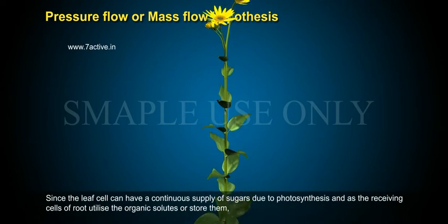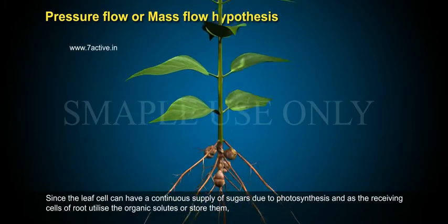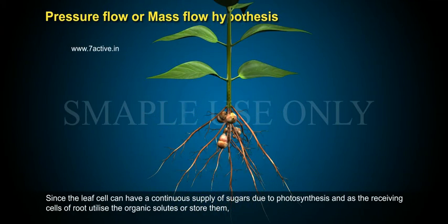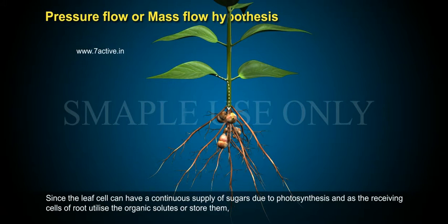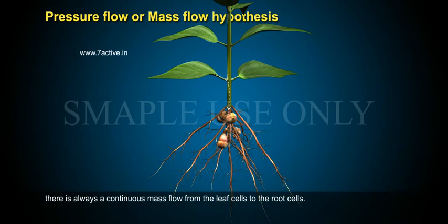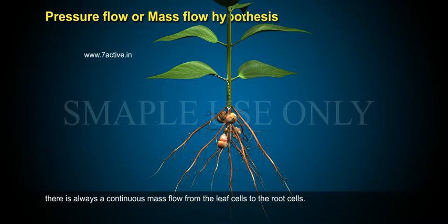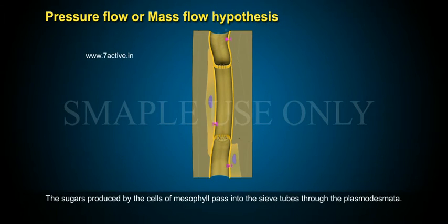Since the leaf cell can have a continuous supply of sugars due to photosynthesis, and as the receiving cells of the root utilize the organic solutes or store them, there is always a continuous mass flow from the leaf cells to the root cells. The sugars produced by the cells of mesophyll pass into the sieve tubes through the plasmodesmata.